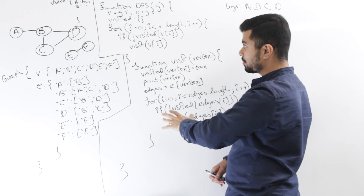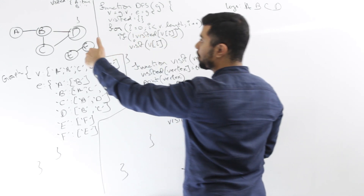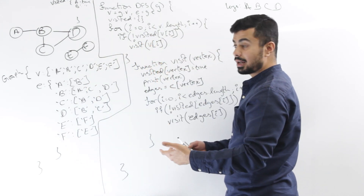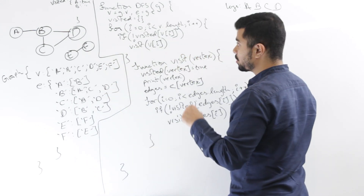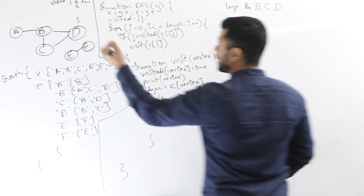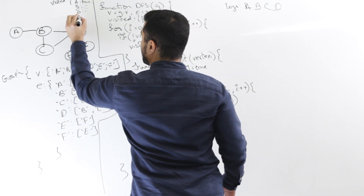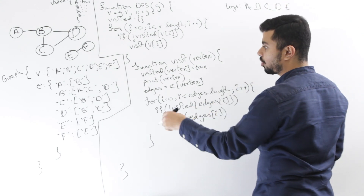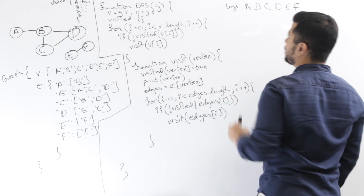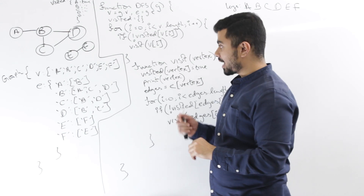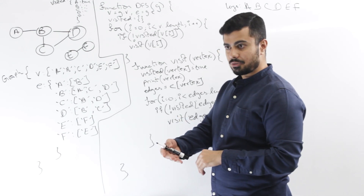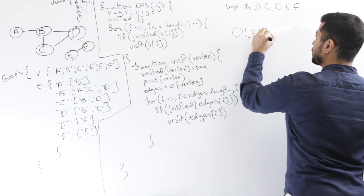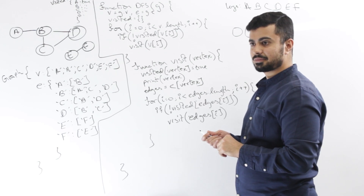The DFS algorithm concludes for that component. Back in the outer for loop, it iterates over b, c, and d — all visited, so nothing to do. Then it hits e: calls visit, marks e as visited, logs e, then recurses on its connection f, and logs f. By the looks of it, this checks out. The time complexity is the typical complexity for traversing an undirected graph: O(V + E).